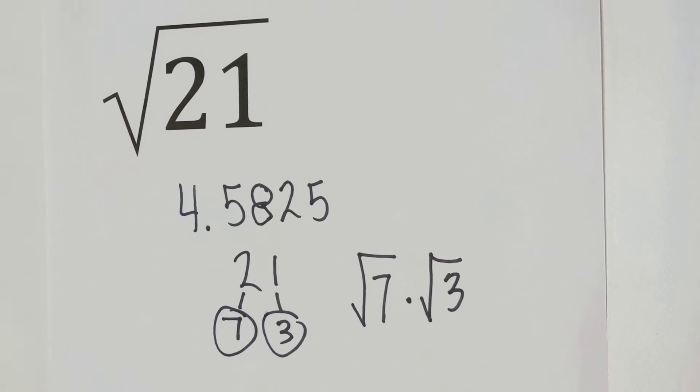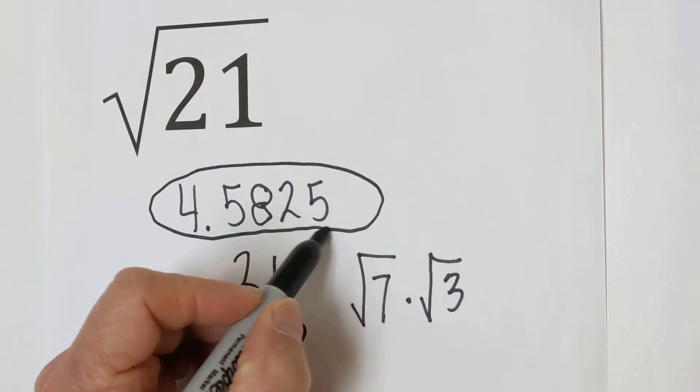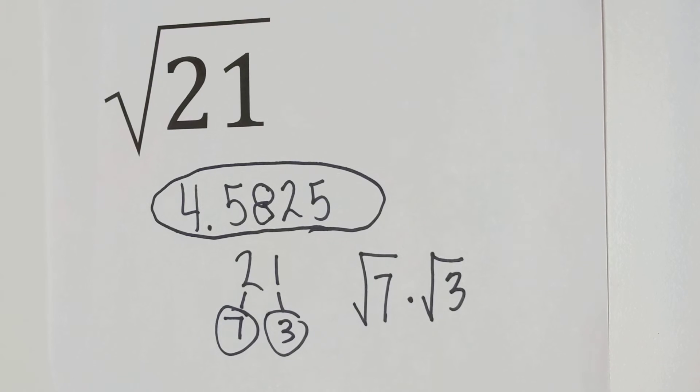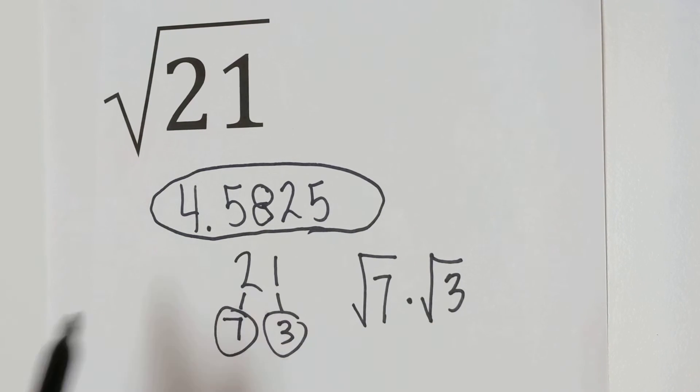So there we go. So in summary, in decimal form, it is right here. It's an irrational number, a non-terminal decimal. And if you want to simplify it, you could go square root of 7 times square root of 3.